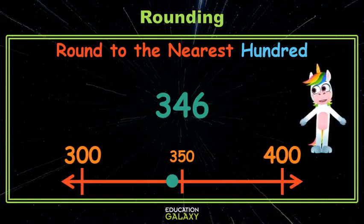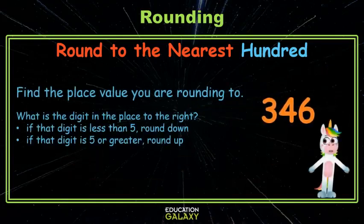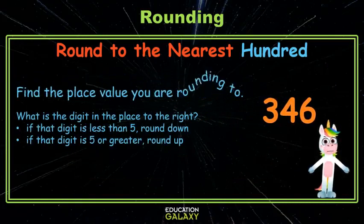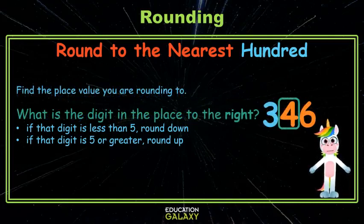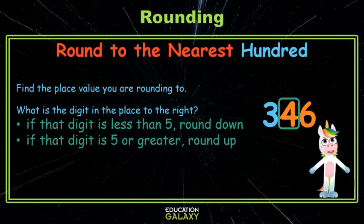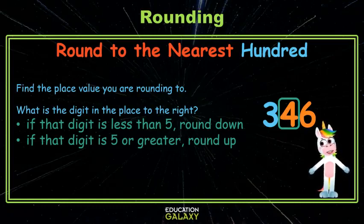But let's go ahead and try it with our rules. First, we find the place value we're rounding to — that's the 100, that's where the 3 is. Then we ask ourselves, what digit is in the place to the right? That's the 4. If that digit is less than 5, round down. If that digit is 5 or greater, round up.